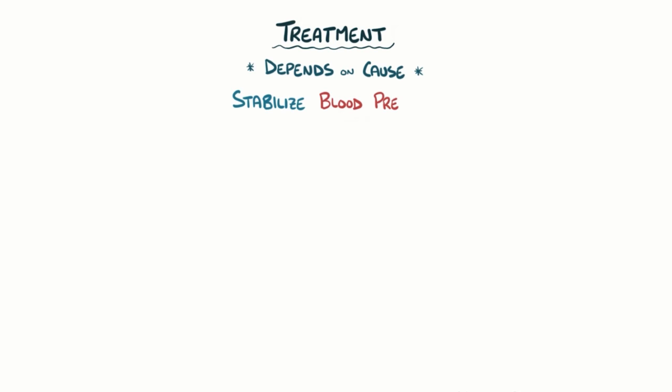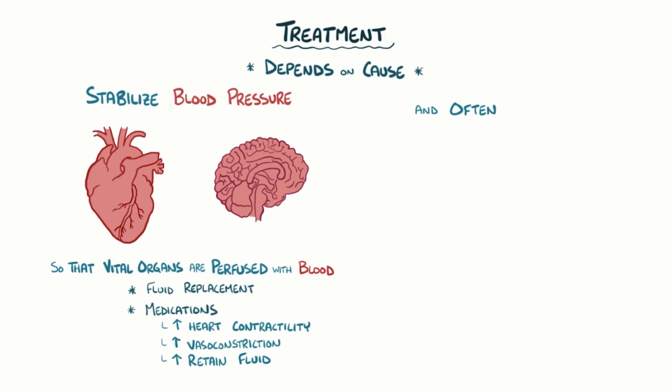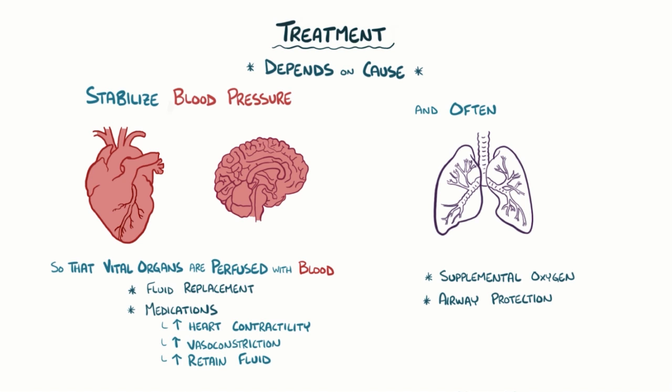Treatment of shock depends on the cause. In general, the goal is to stabilize blood pressure so that vital organs like the heart and brain are perfused with blood. Fluid replacement and medications that increase heart contractility, cause vasoconstriction, and retain fluid can be administered. A person might also need supplemental oxygen or airway protection, for example with intubation.